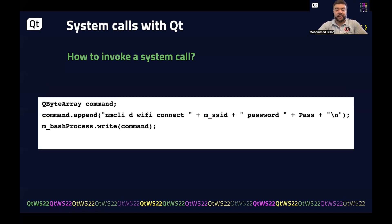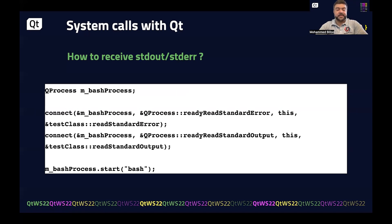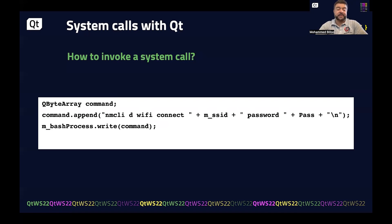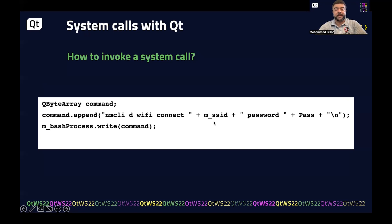Now that we have our bash process ready, how do we actually formulate a system call? All we need to do is create an object of type QByteArray, append the string corresponding to the system call we want to make, and then pass that to the QProcess we've already started. Here we have a simple system call to connect to a WiFi network with a specific SSID and password, then we call the write method on that class — it would be as if we're writing this command on the terminal of the platform.